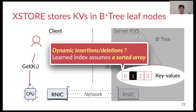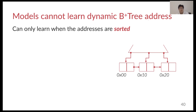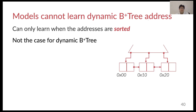We start from the server-side data structure used in XDoor. As we mentioned before, the key obstacle for efficient insertion and deletion is that the learned model assumes a sorted array to store all the key values. So XDoor does not use a sorted array to store the key-value pairs. We store them in the B-tree leaf nodes as in traditional approaches, which is efficient for insertions and deletions. However, there is a problem using a learned model to learn the mappings from a given key to addresses in a dynamic B-tree, because the model assumes the value addresses are sorted, which is not the case for a dynamic tree.